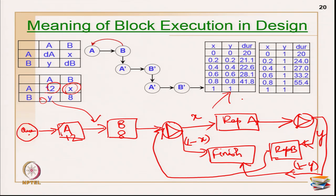If I use 0.2 for x, then 0.8 goes to finish and 0.2 repeats. That is all on DSM - Dependency Structure Matrix. All four phases have been explained in detail with examples. Next class we will see another topic.